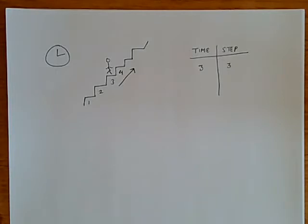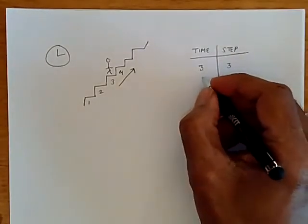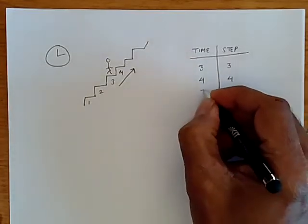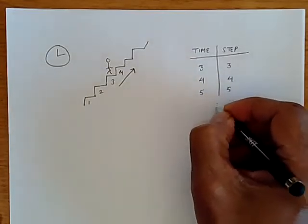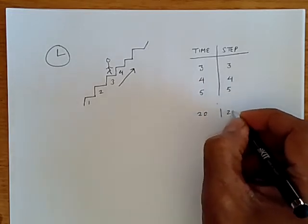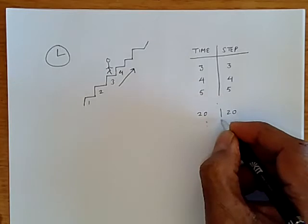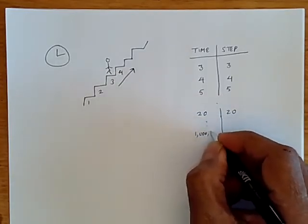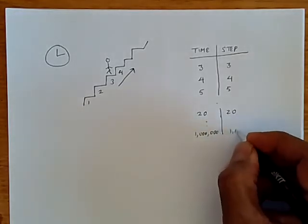So we can ask the question, where would the person be at time 4? Well, they'll be at step 4. And time 5 is step 5, etc. And if you ask at time 20, they'll be at step 20. And even if you go quite far into the future, let's say 1 million, the answer is they'll be at step 1 million.